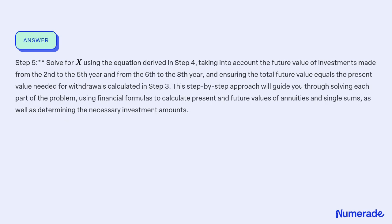Step 5: Solve for X using the equation derived in Step 4, taking into account the future value of investments made from the 2nd to the 5th year and from the 6th to the 8th year, and ensuring the total future value equals the present value needed for withdrawals calculated in Step 3. This step-by-step approach guides you through solving each part of the problem using financial formulas to calculate present and future values of annuities and single sums, as well as determining the necessary investment amounts.